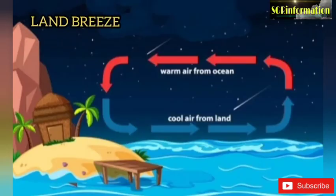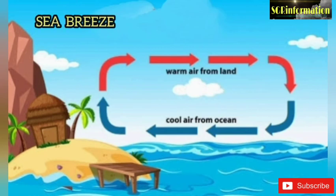Land breeze: at night, land gets cooler more quickly as a result of rapid radiation than the adjoining sea. This results in high pressure over the land and low pressure over the sea. Wind starts blowing from land to sea and is called land breeze.